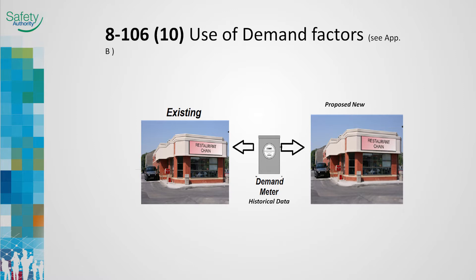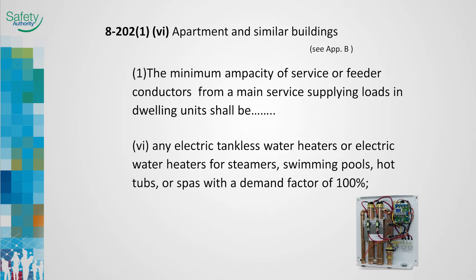Here's an example where Sub Rule 10 might be applied. Rule 8202, Sub Rule 1 is used to determine the minimum capacity of a suite feeder and the panel board size. Item 6 is new and is meant to ensure that the service and feeder calculations account for the on-demand loads required by residential tankless water heaters and similar equipment when supplied by the suite feeder in apartments, townhomes and condominiums. Previous codes provided a generous demand factor which is not suitable for these types of loads.